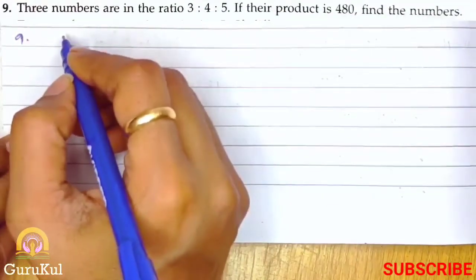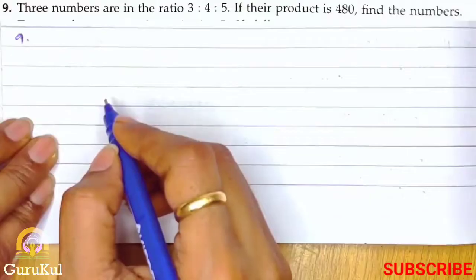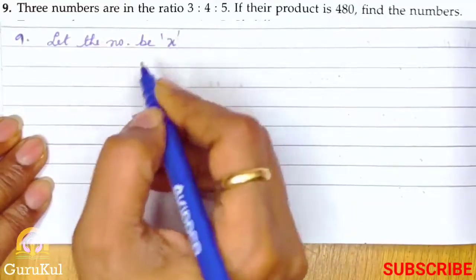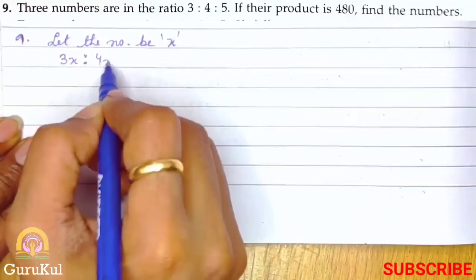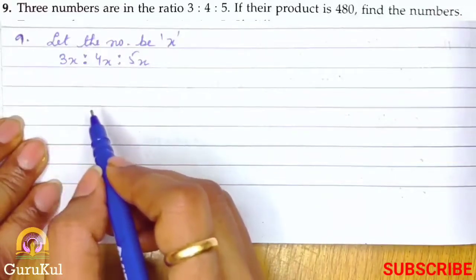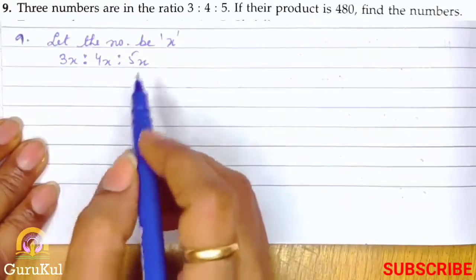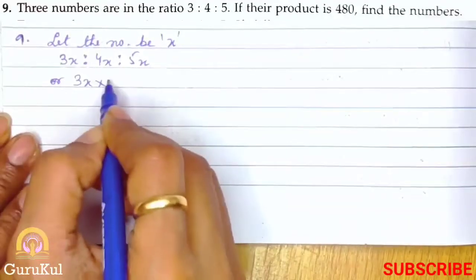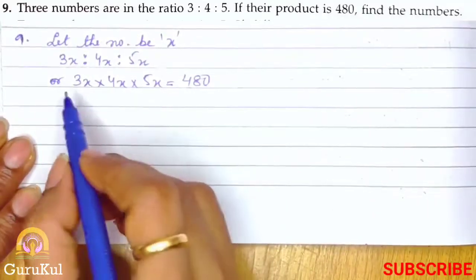Question number 9: Three numbers are in the ratio 3:4:5. If their product is 480, find the numbers. First, let the numbers be x. The ratio is 3x:4x:5x. Product means multiply, so 3x × 4x × 5x equals 480.